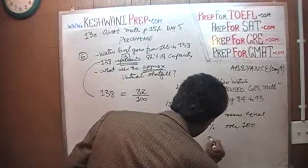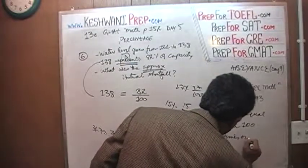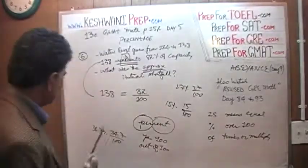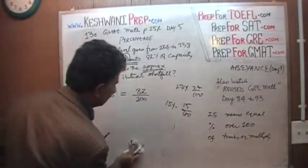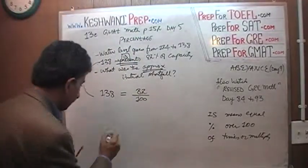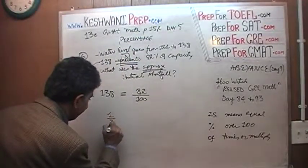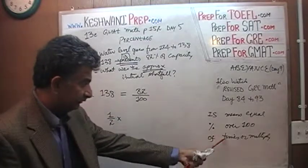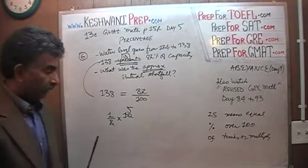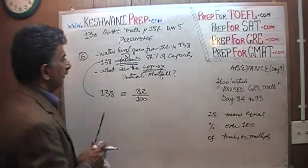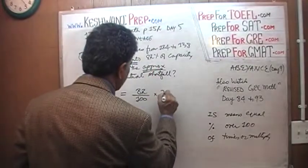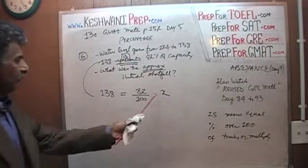What does of mean? Of means times or multiply. For example, if somebody were to ask us, what is half of 10? Half of, of, you see? Of means times. 10. Half of 10 is 5, obviously. Of means times. So we got percentage, we got of, and then the capacity. Let's call it x. We have to solve for the x here.